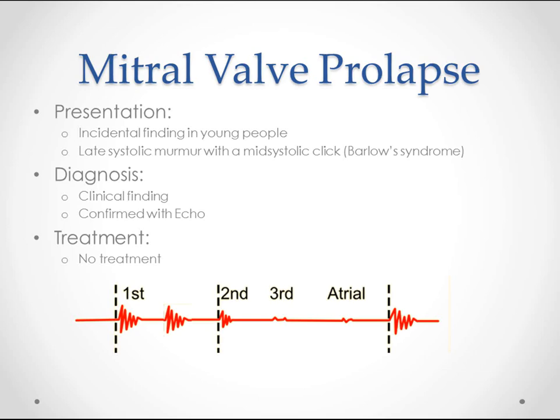Sometimes with a late systolic murmur if there's going to be regurgitation. In a lot of these though, there's no regurg so you won't hear that late systolic murmur. If you do, then you're probably getting into a more symptomatic case of mitral valve prolapse. You diagnose this with clinical findings and confirm it with an echo. Since it's asymptomatic in most cases, it's probably just going to be an incidental finding, and you don't need to treat it. But later on you may have to treat it if it ends up with a serious regurgitation.